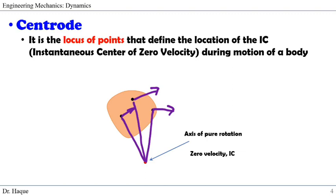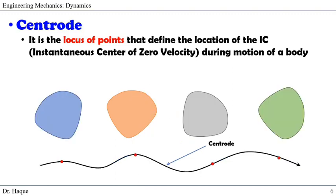If we take the direction of velocity of each point on the body and the relative position of these points from that point, they will be perpendicular. Now, if we consider such an IC point for each and every instant, we can have a locus of IC points. If you see on the image, for all four instants, you can see the red dots as the IC points. For all possible instants, you can have a continuous position of those IC points that form a locus. And this locus of IC points is called Centrode.